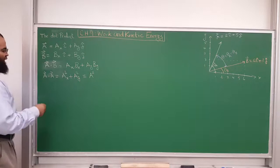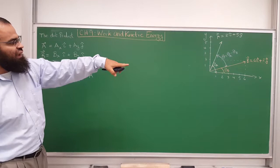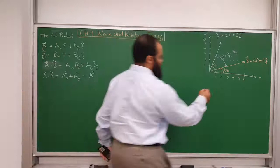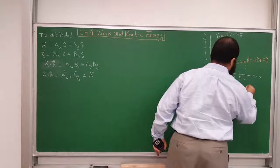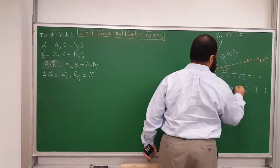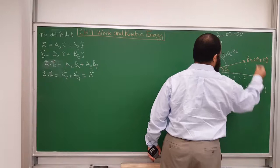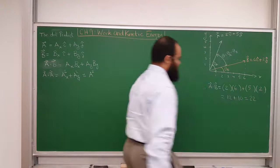So in our instance here, if vector A is 2i-hat plus 5j-hat and vector B is 6i-hat plus 2j-hat, let's find their dot product. It would be the x-component of A times the x-component of B, plus the y-component of A times the y-component of B. The x-component of A is 2, x-component of B is 6, y-component of A is 5, y-component of B is 2. So you get 2 times 6 is 12, plus 5 times 2 is 10, giving you 22 — just a scalar.